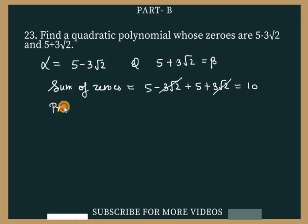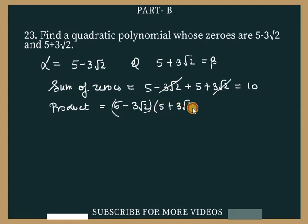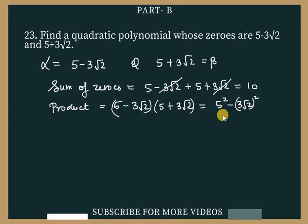Next, we find the product of zeros: α × β = (5 - 3√2)(5 + 3√2). Using the identity (a - b)(a + b) = a² - b², we get 5² - (3√2)² = 25 - 9 × 2 = 25 - 18 = 7.